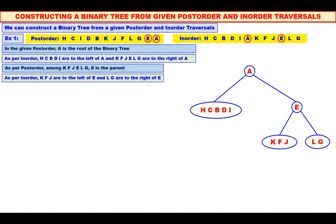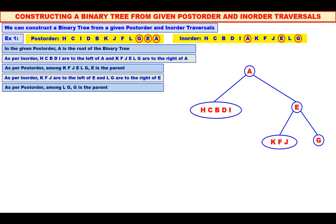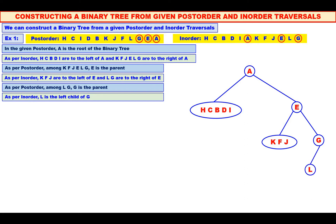Now, among L and G, which is the parent? See the post-order — the last one is G. Therefore, G is the parent. We will make G as the parent and mark it in the inorder. If you carefully see the inorder, L is the left child of G.